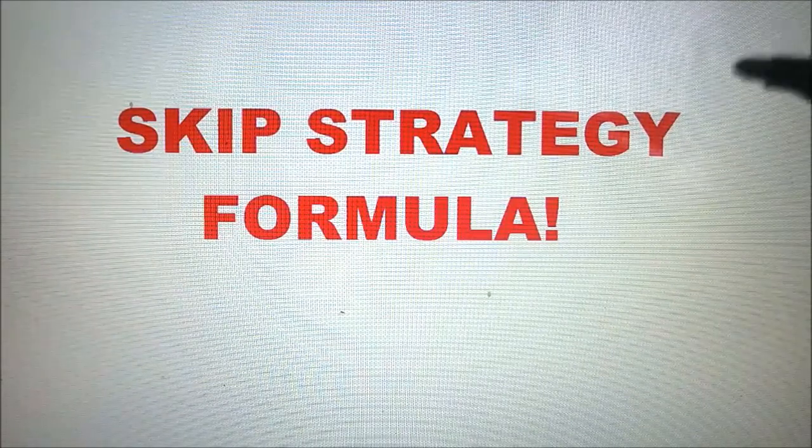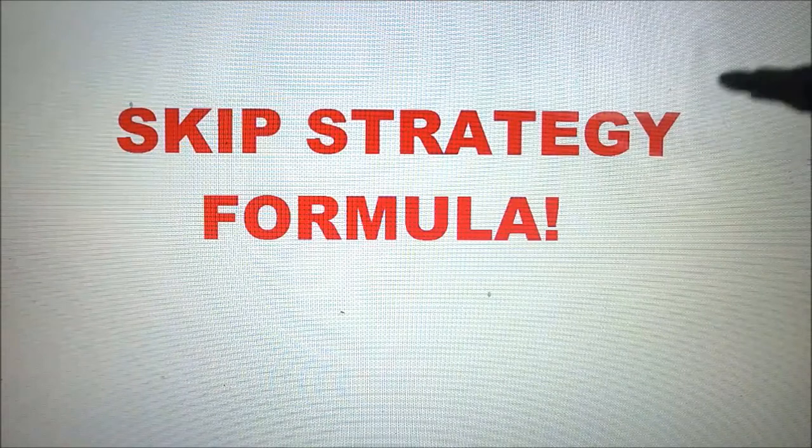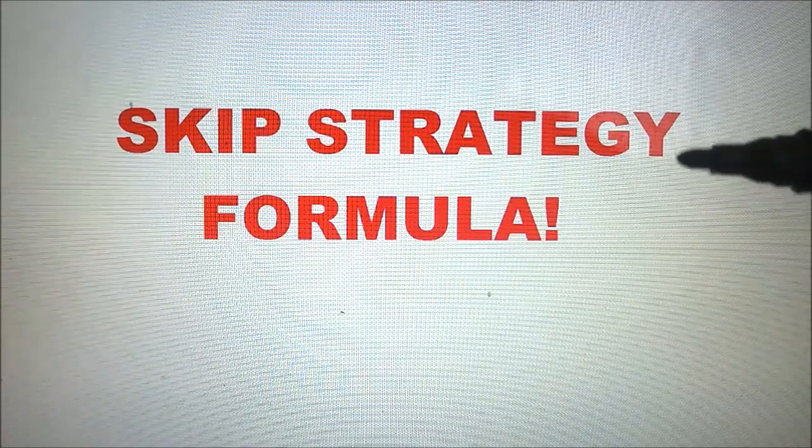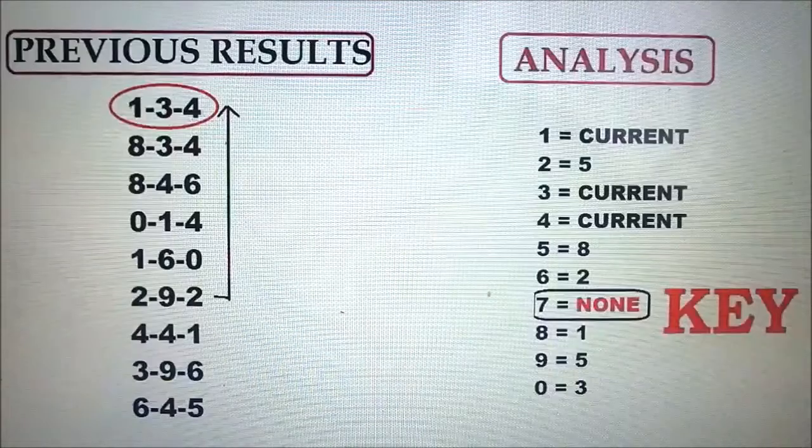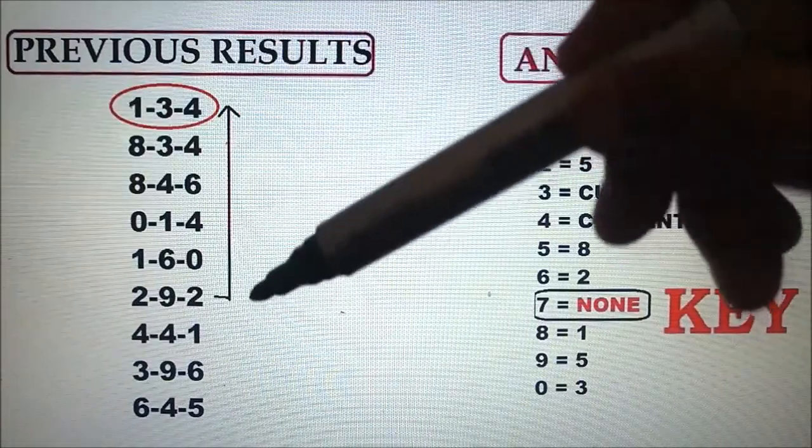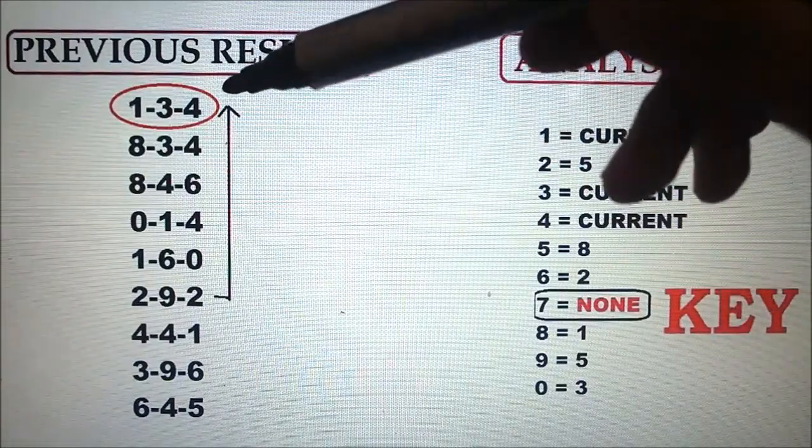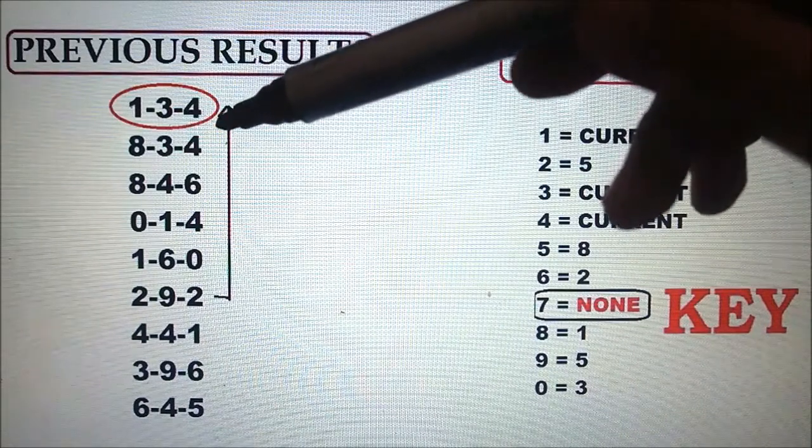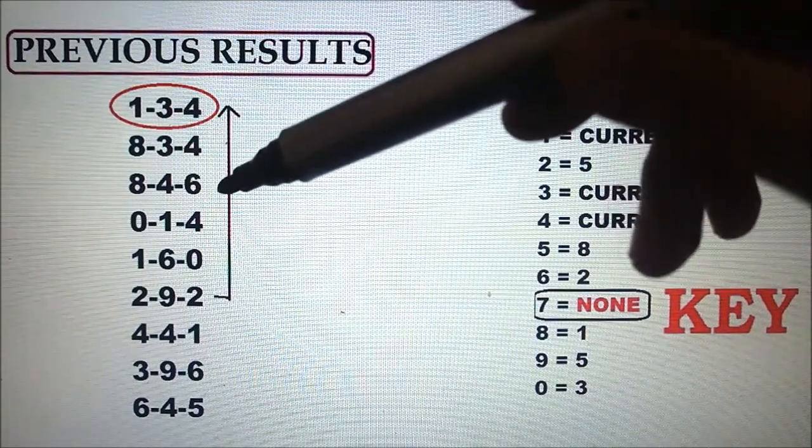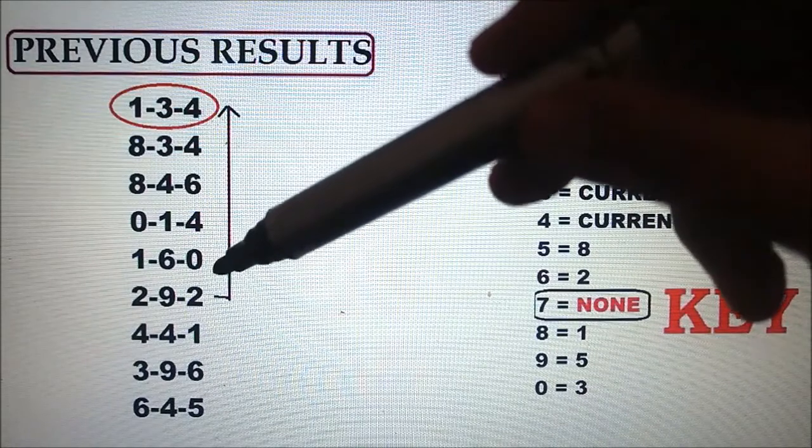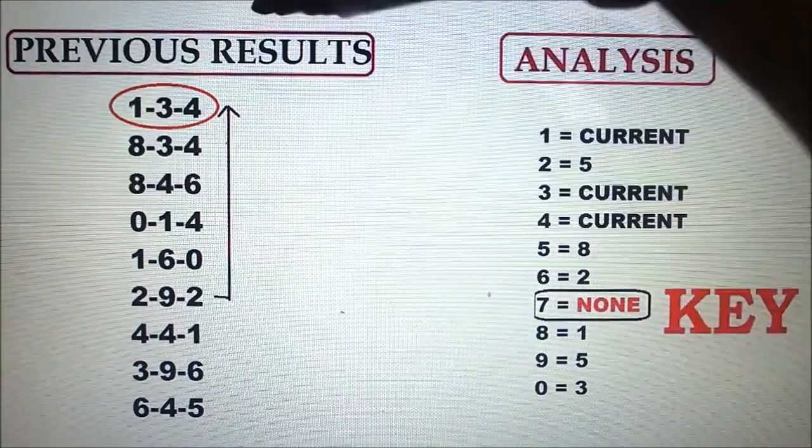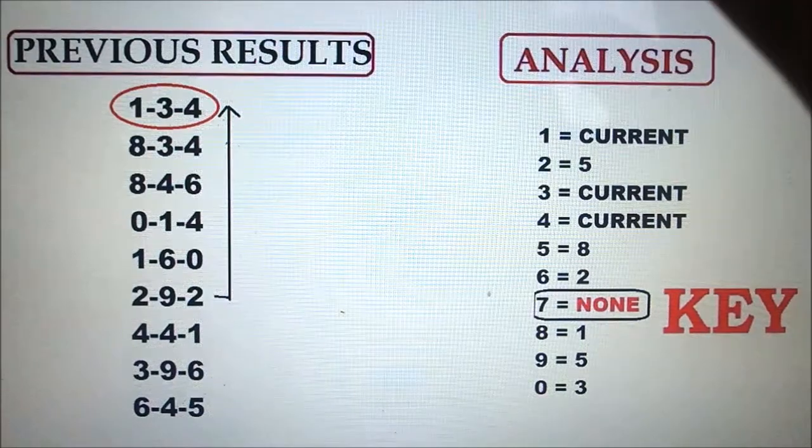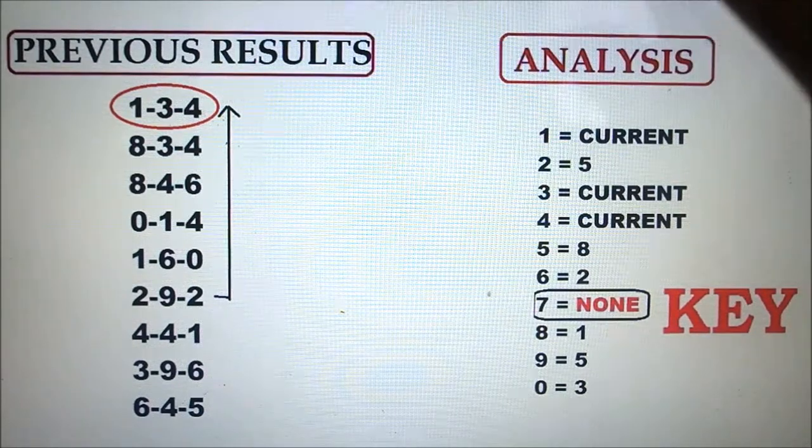On this example, the previous results are 1-3-4, 8-3-4, 8-4-6, 0-1-4, 1-6-0, 2-9-2, 4-4-1, 3-9-6, and 6-4-5. These are nine previous results and these are based on evening draws.